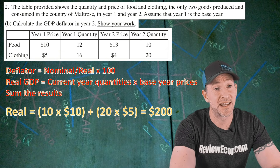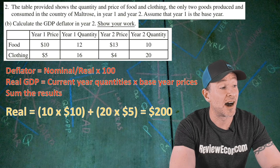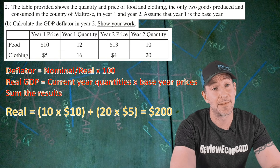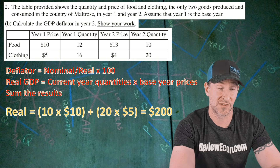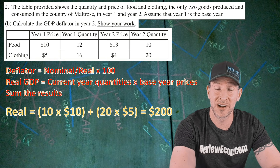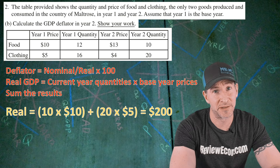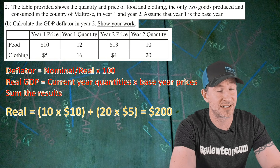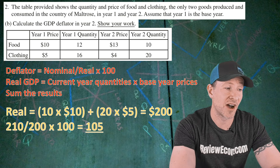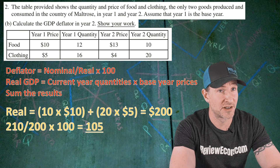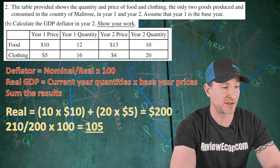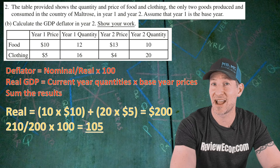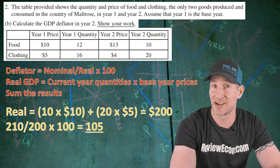There are 10 units of food times $10 — that's $100 worth of food — and 20 units of clothing times $5 is $100 worth of clothing. Add those together and it's $200 worth of real GDP. Now plugging in the numbers to find our GDP deflator: $210 of nominal GDP divided by $200 of real GDP times 100 equals 105 for our GDP deflator. If you have all that math, you get your next point.